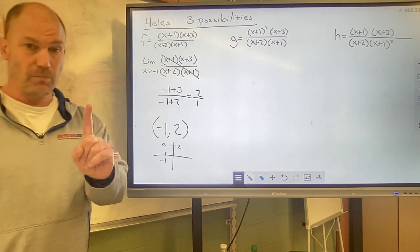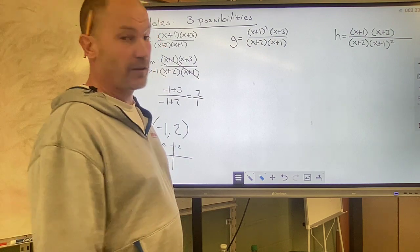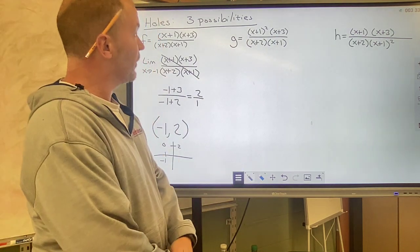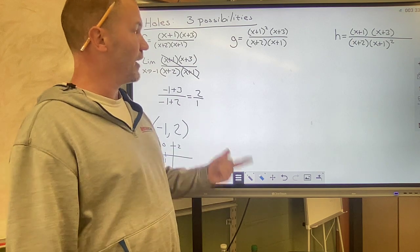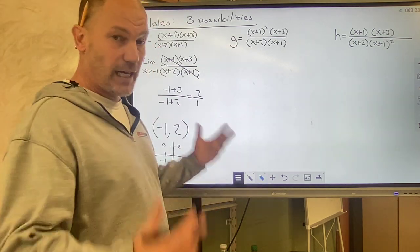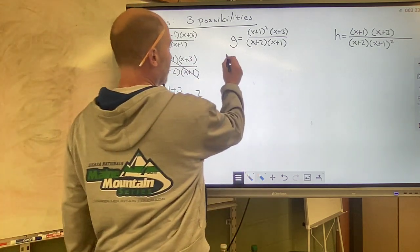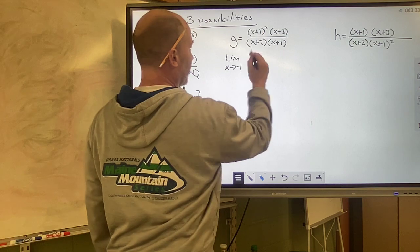Okay, so that's option number 1. Option number 2 is something like this. Again, we should be looking at it and going, oh yeah, hole at negative 1, vertical asymptote at negative 2, and a zero at negative 3, all potentials. So we are going to find the limit as x approaches negative 1 of this function.